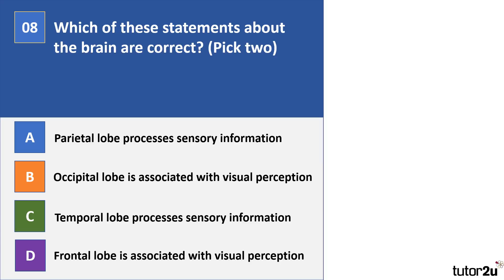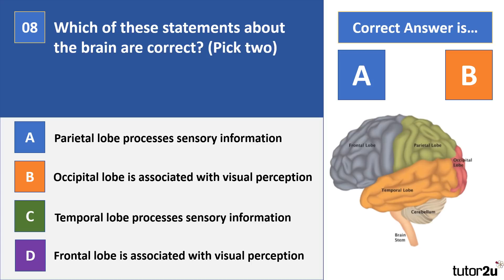Question 8: I'd like two correct statements about the brain. The correct answers are A and B. The parietal lobe processes sensory information — specifically, the somatosensory area is located within the parietal lobe, just behind the central sulcus between the frontal and parietal lobes. The occipital lobe, at the back of the brain, is associated with visual perception — which is why mothers support the back of a newborn's head, as the skull isn't fully formed and damage there could affect vision.